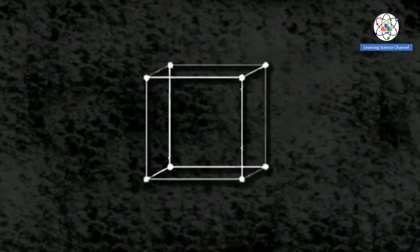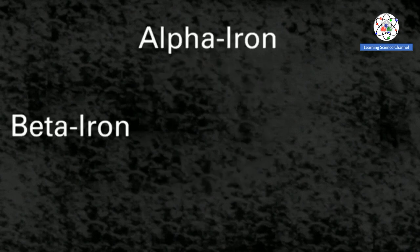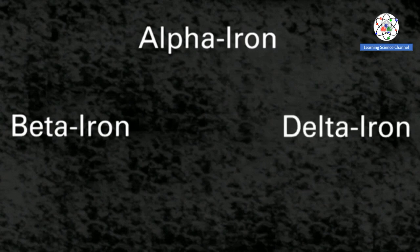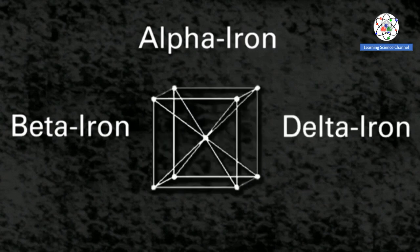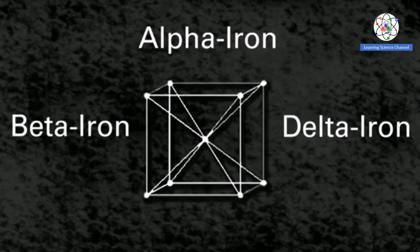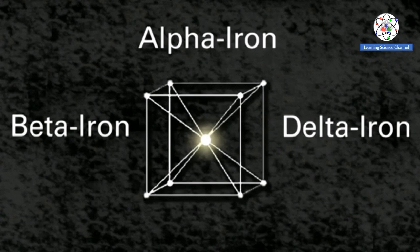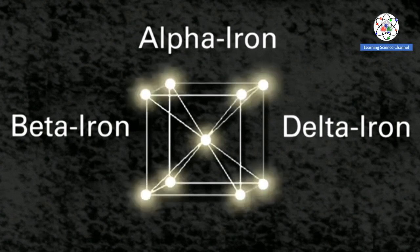The three most common allotropes each have a cubic structure. Alpha iron and beta iron and delta iron each have a body-centered cubic structure. In this structure, there is an iron atom at the center of the cube, which is linked to all eight iron atoms at the vertices of the cube.